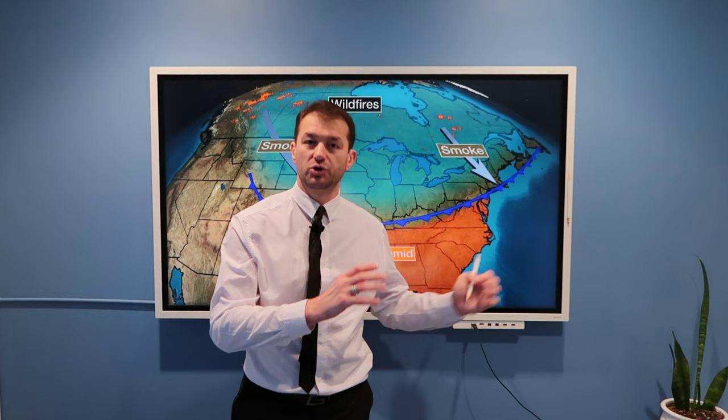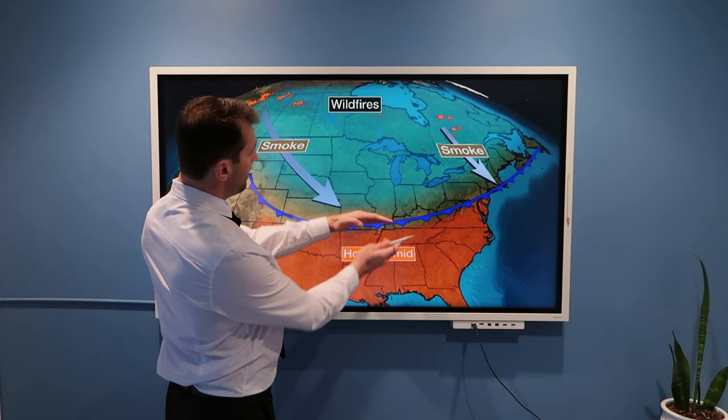Here, blue line represents cold front separating cold air from the north from hot and humid air to the south. How does that affect weather? How does that affect smoke dispersion and so on? We will discuss that here.